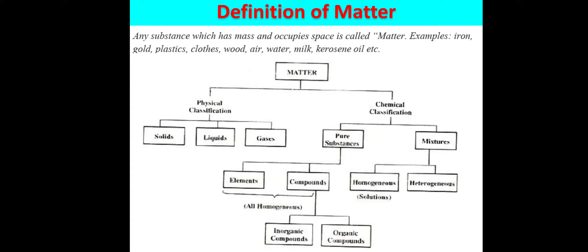wood, air, water, milk, kerosene oil, etc. So we can say that any material which has some mass and occupies some space in the atmosphere or environment is called matter. Matter can be classified into two major parts: first is physical classification and second is chemical classification.